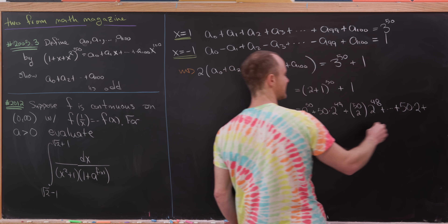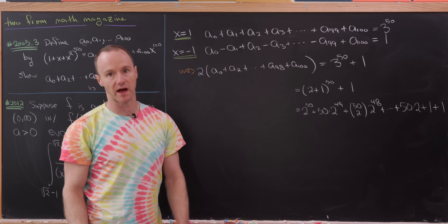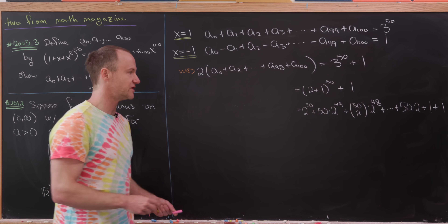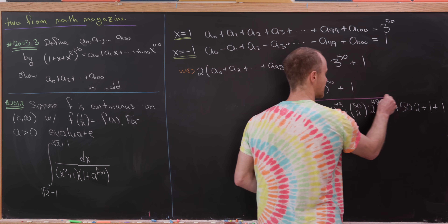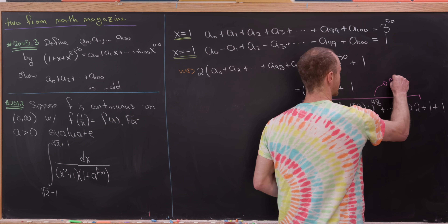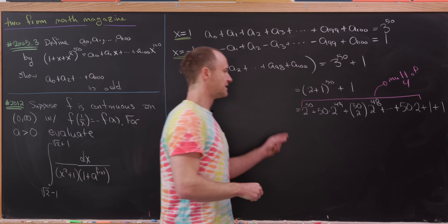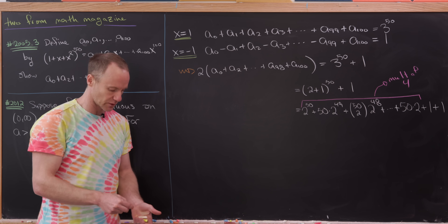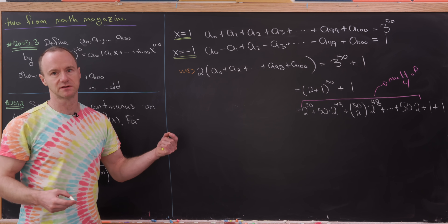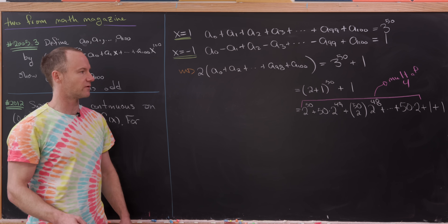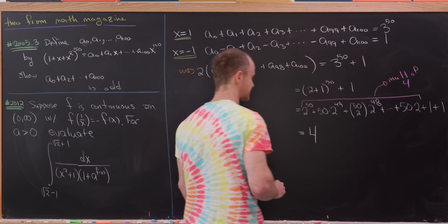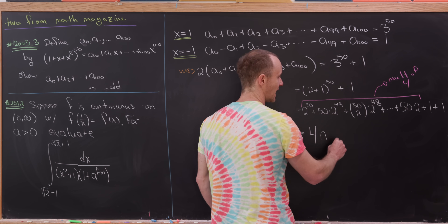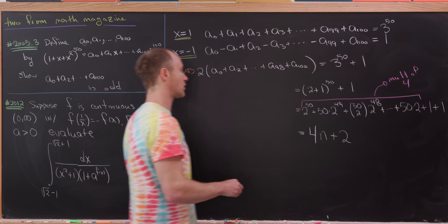The expansion ends with 1^50, plus another 1 from the right-hand term. The important thing to notice is that everything except those final two 1s is a multiple of 4 — every higher power of 2 is clearly a multiple of 4, and the last coefficient is 50 (a multiple of 2), so 50·2 = 100 is also a multiple of 4. We factor out a 4, calling the rest n, leaving 4n + 2. Dividing both sides by 2 gives a0 + a2 + ... + a100 = 2n + 1, which is clearly odd.